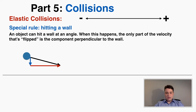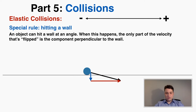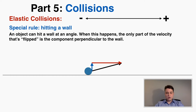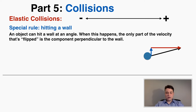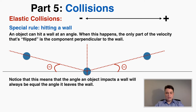If an object hits a wall at an angle, only the component of velocity perpendicular to the wall is flipped. The component parallel to the wall stays the same direction and same size. So if an object moves toward the wall, the vertical perpendicular component is flipped to the opposite side while the horizontal parallel component remains unchanged, and the resulting total velocity shows the ball moving away from the wall. This means the angle an object impacts a wall always equals the angle it leaves the wall, because the two triangles are the same magnitude.